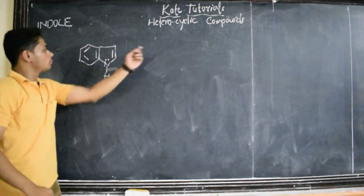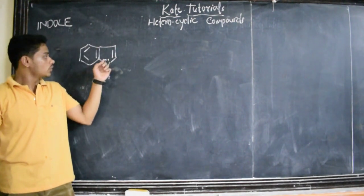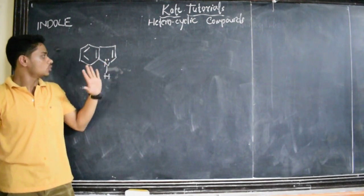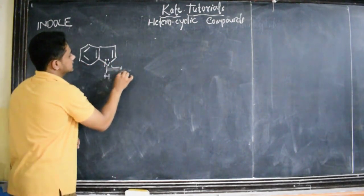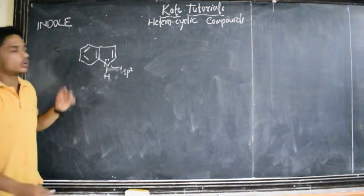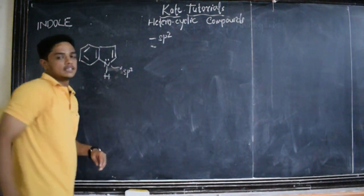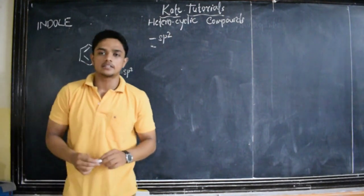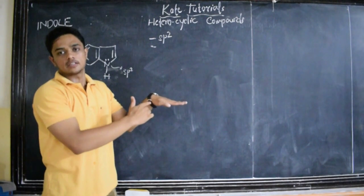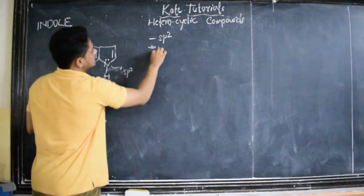These two pi electrons of this nitrogen are going to involve in the resonance. To involve in the resonance, they should be present in unhybridized p orbitals. So, the hybridization of this nitrogen is sp2, and all carbons are also sp2 hybridized. My first point is all elements are sp2 hybridized. Since these are sp2 hybridized, they will be in a planar structure — in a single plane. So the whole indole is in a single plane.